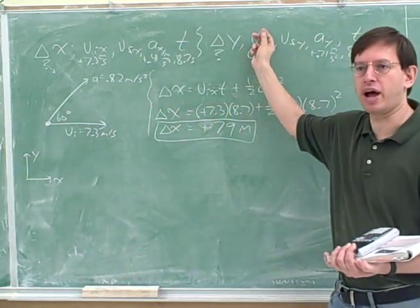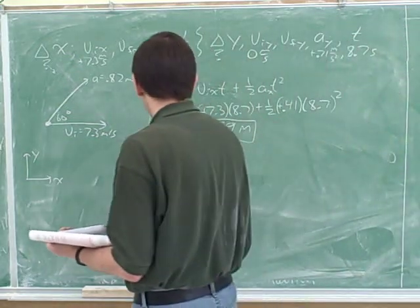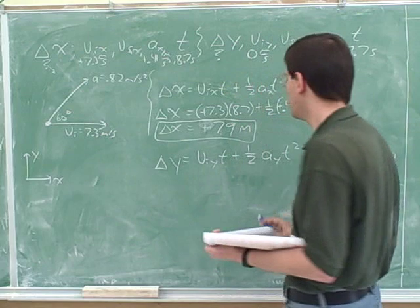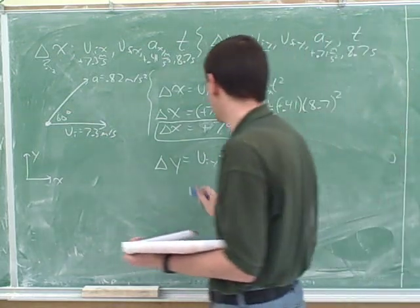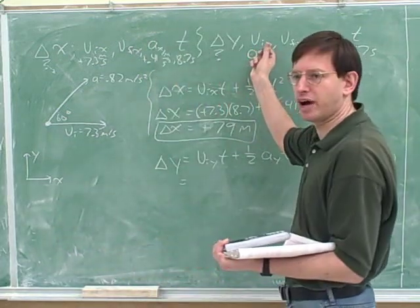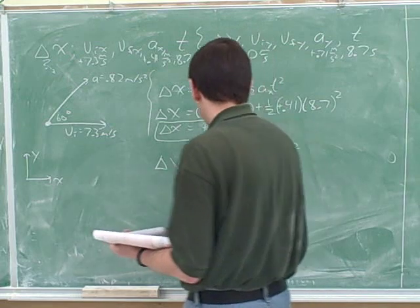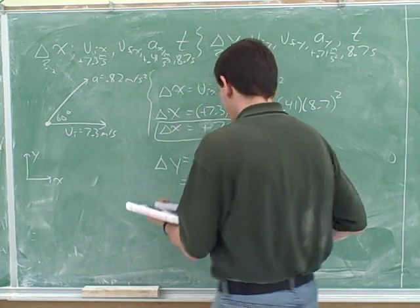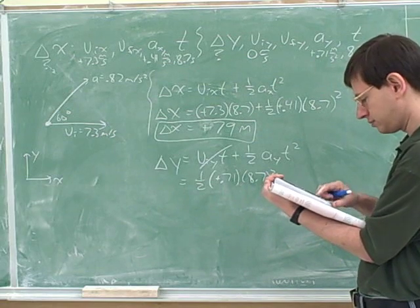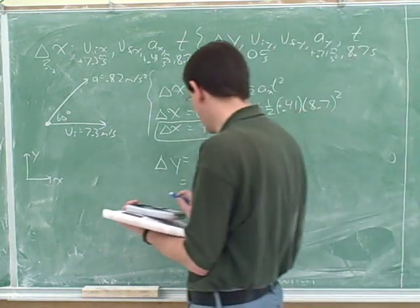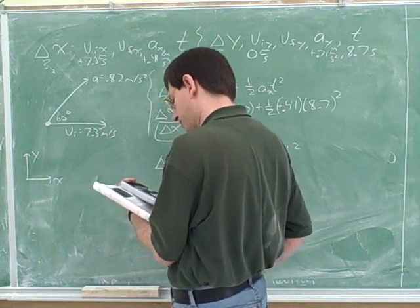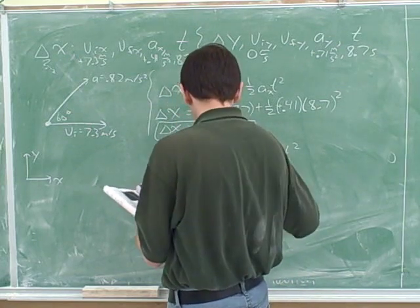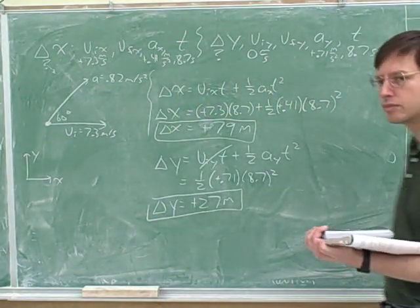What do we do now? Well, we do it all over again for the Y component, and here we're missing the same variable. So we use the same equation. But now the equation is delta Y equals V initial Y T plus 1/2 A sub Y T squared. Again, don't forget to put in those sub Y subscripts. Otherwise, the variables aren't correct. So V initial Y, well, this one should be easier because V initial Y was 0. So this term is going to drop out. So we just have 1/2 times 0.71 times 8.7 squared. What did you get for that? 26.86. Yeah. So I'll round that out to 27.